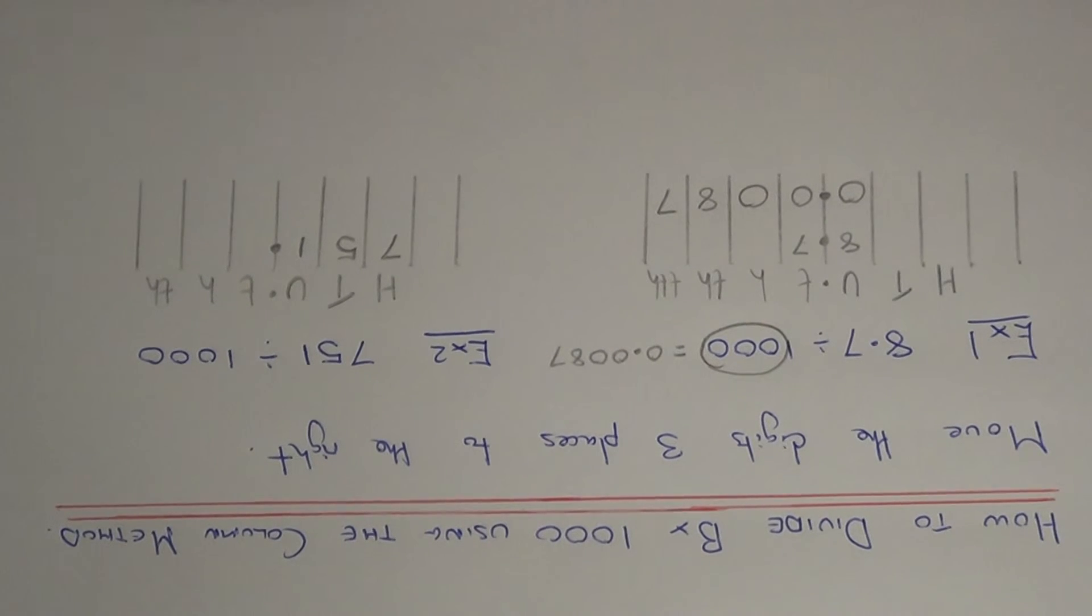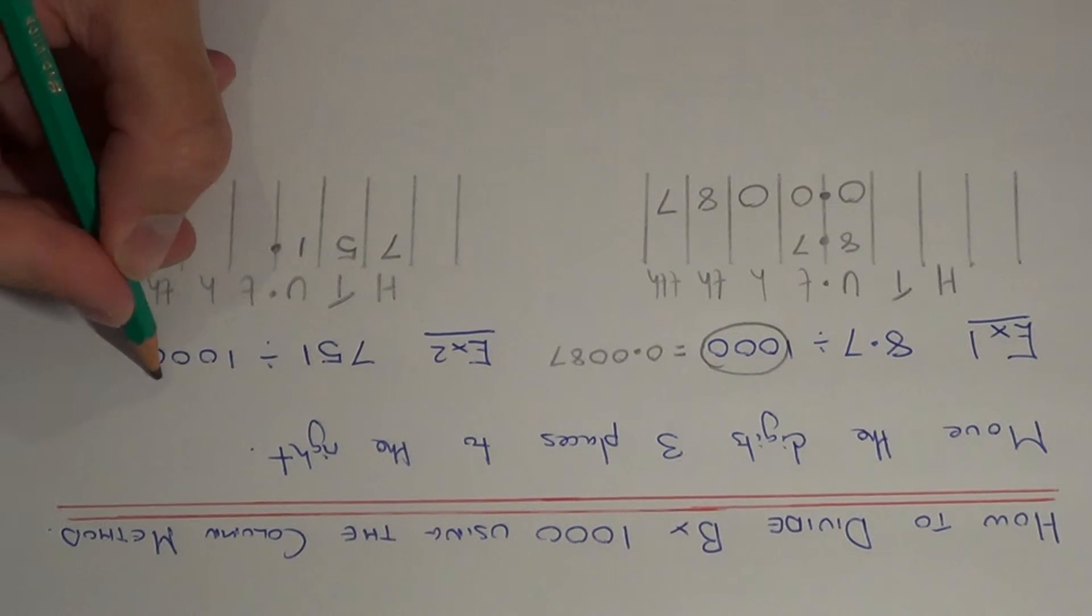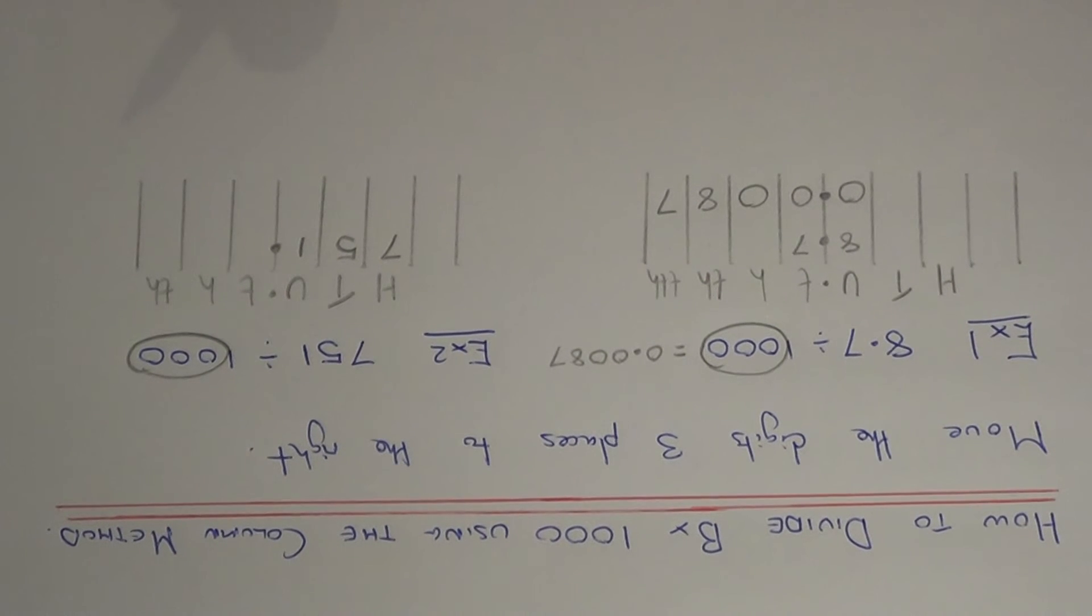So again we need to divide by a thousand, so we move the digits three places to the right. So if we move the one first, 1, 2, 3. Move the five next, 1, 2, 3. Now move the seven, 1, 2, 3.